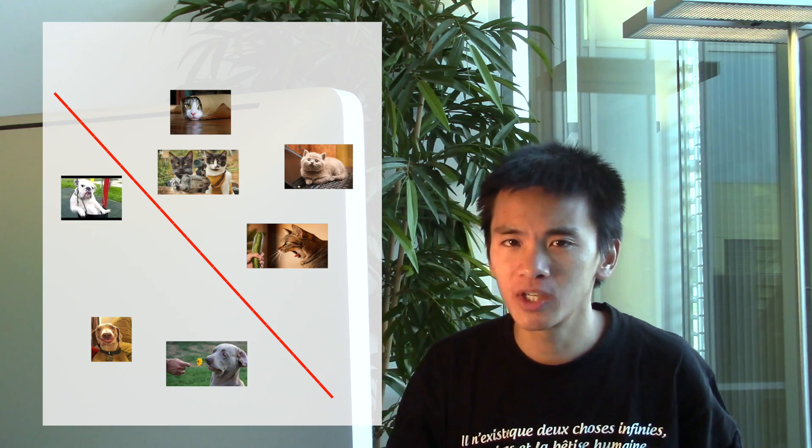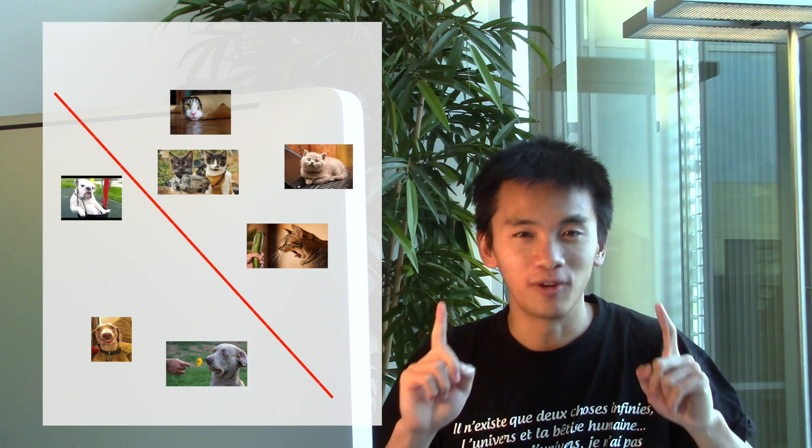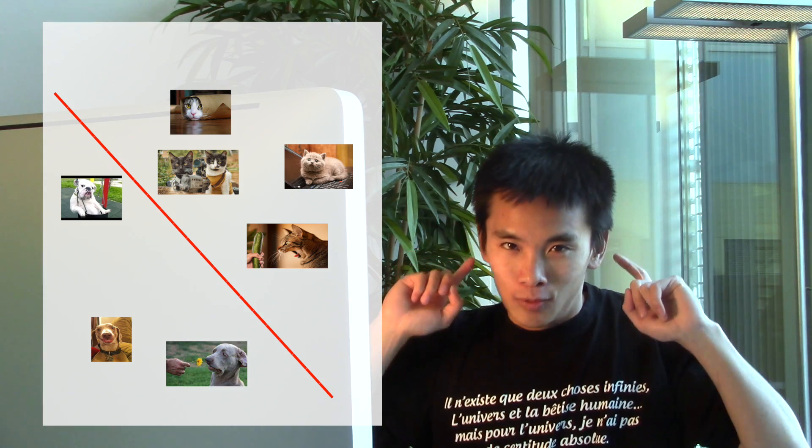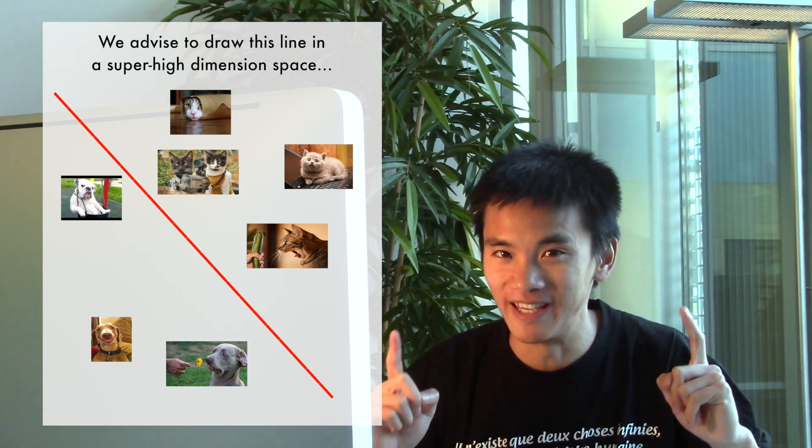Once these pictures are located in a, wait for it, super high dimensional space. I'm not high. This is actually literally what a lot of machine learning does. It draws lines, or rather, so-called hyperplanes.